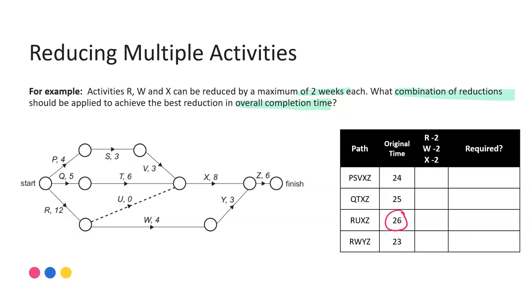The next thing I do is I am going to apply all of the reductions that I've been told I can. So in this particular example I was told R, W and X could all be reduced by two weeks. So anywhere where any of those activities occur I can take two weeks off the overall current completion time. So in my first pathway I definitely have an X. That means I can take two off that current original completion time of 24, so it'll come down to 22. The second pathway again I have an X but no R, no W, so again I can take just two off bringing it down to 23.